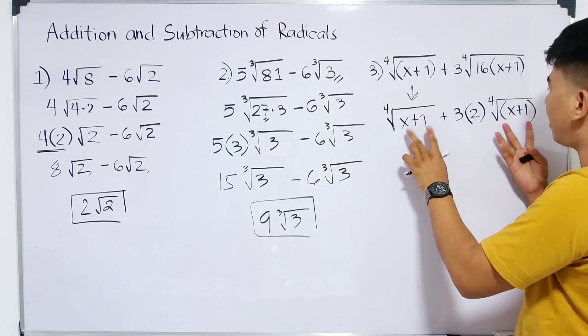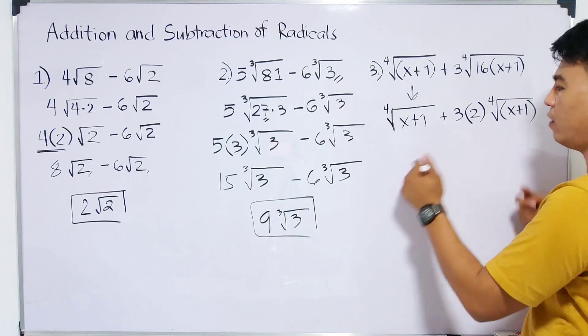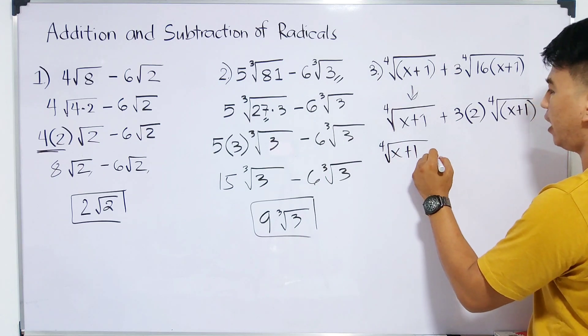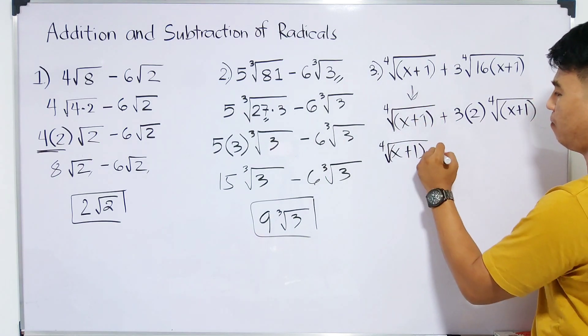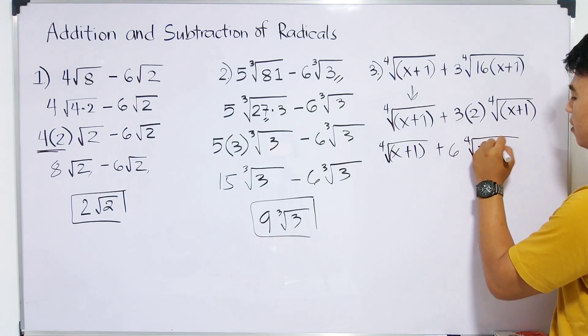As you can see guys, their radicands are the same. But before we add, let's simplify this. We have the 4th root of x plus 1, and then this one is plus 6 times the 4th root of x plus 1.